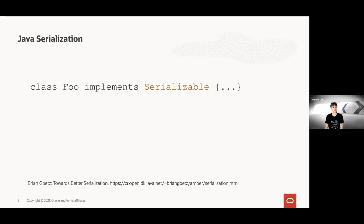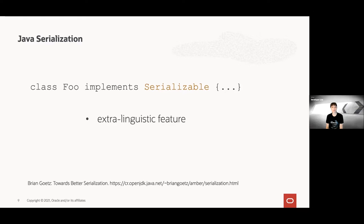Brian Gatz gives a good overview in the linked article. Three points are especially relevant for this talk. First, Java serialization is really an extra-linguistic feature. It comes across like a library feature because you can implement an interface, but under the hood it uses privileged mechanisms — in particular reflection. It ignores accessibility, most prominently of private fields, and it bypasses constructors. There is a lot of dark magic going on that is hidden to the developer.